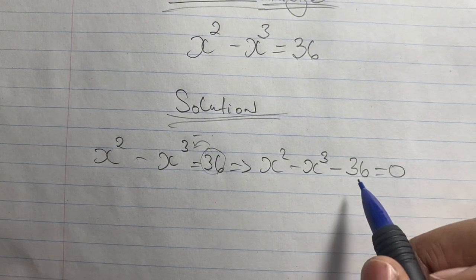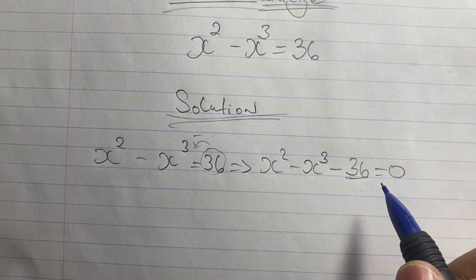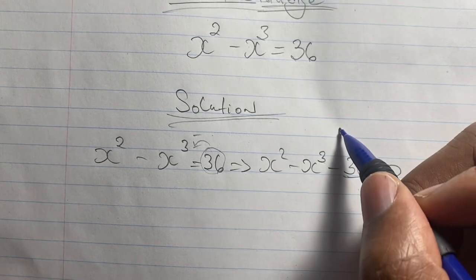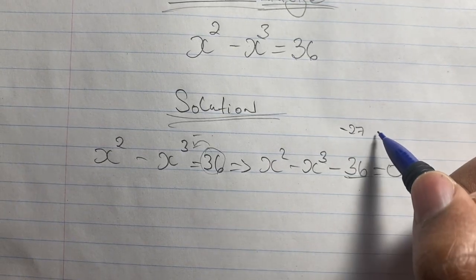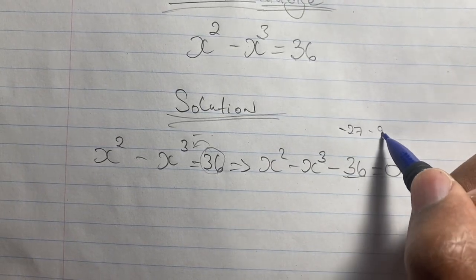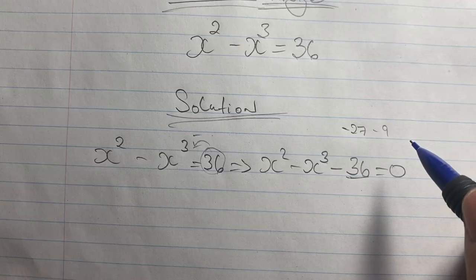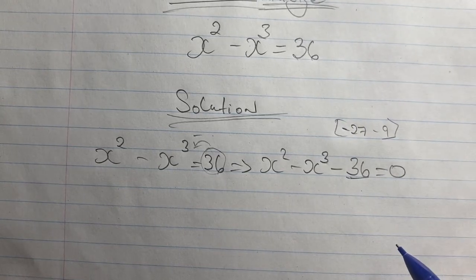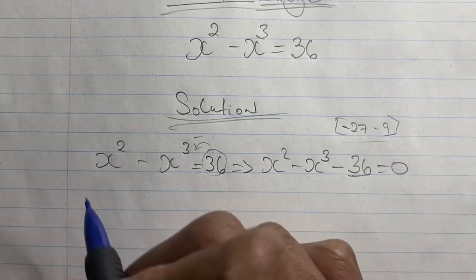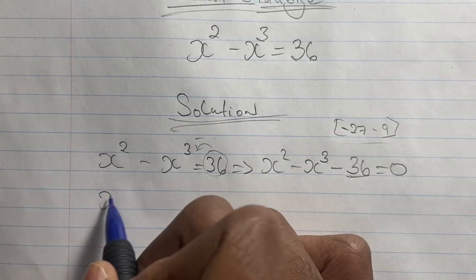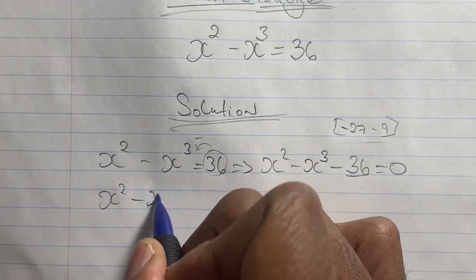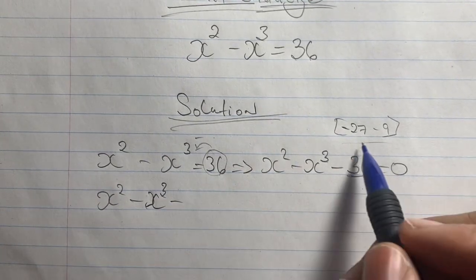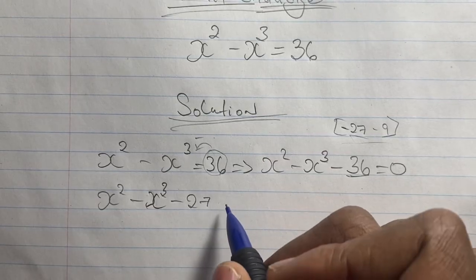Now we have this negative 36, and we know 36 can be broken down into negative 27 minus 9. So from here we can rewrite our equation with this in mind: x squared minus x cubed minus 27 minus 9.